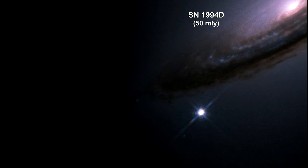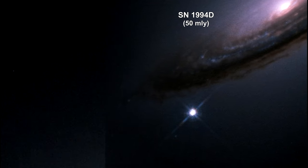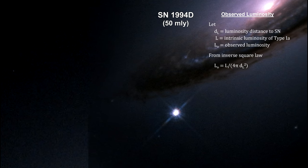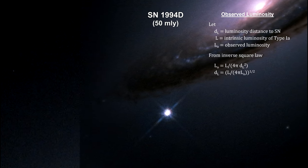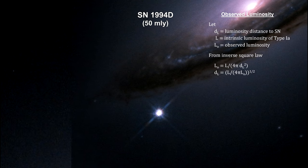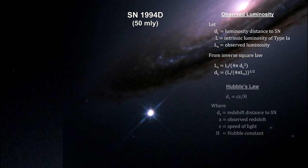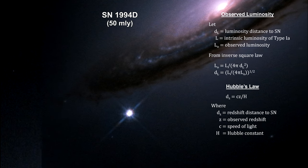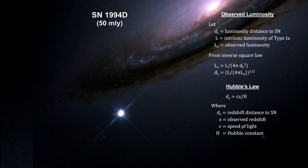Supernovae provide a luminosity reading that enables us to determine their distance via the inverse square law. This distance is called the luminosity distance. Type Ia supernovae also provide a redshift reading that gives us the distance via Hubble's law.